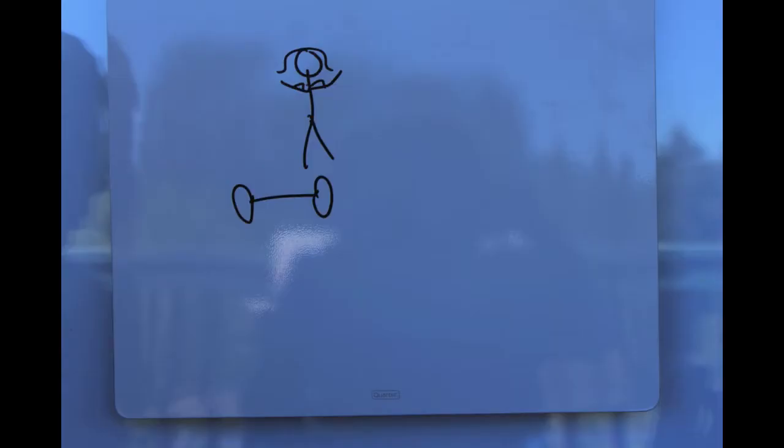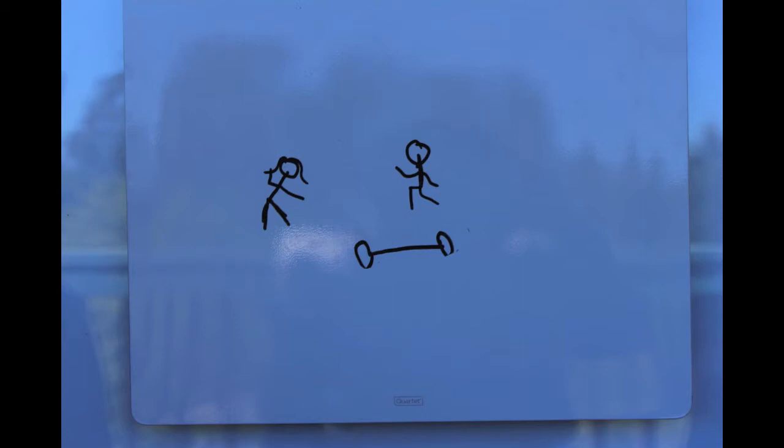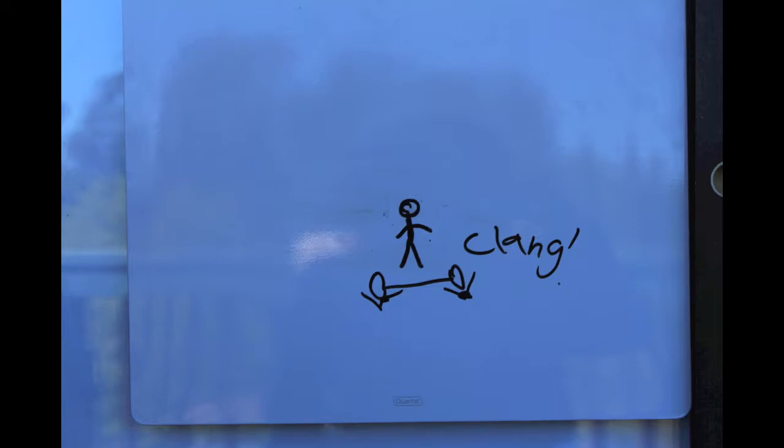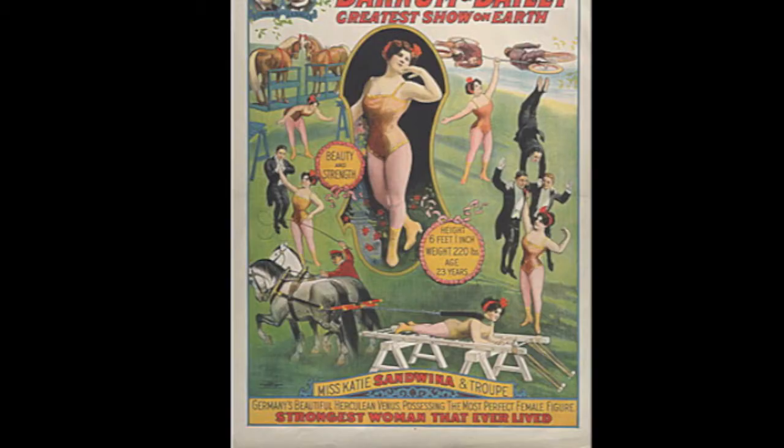Katie went first, grabbing the weighted bar and hoisting it over her head. It was no easy feat and she dropped it with a clang immediately afterwards. Not wanting to be bested, Eugene grabbed the same bar and attempted to raise it above his head. He strained with his trained back, arms, and legs but only managed to get it to his chest. He dropped the bar, tired and out of breath.